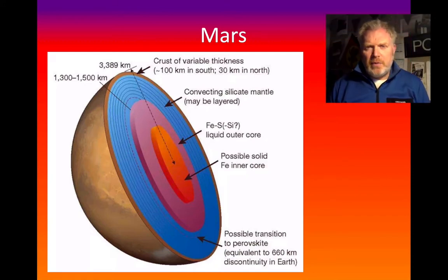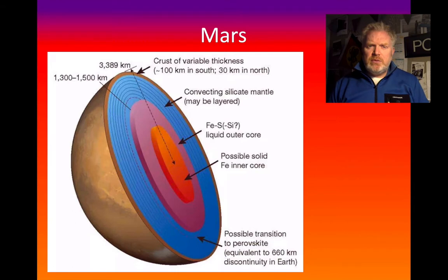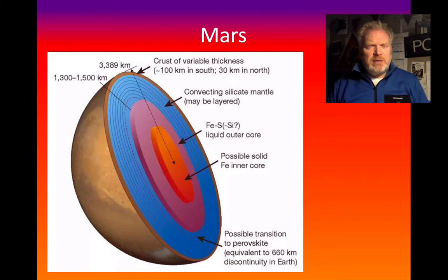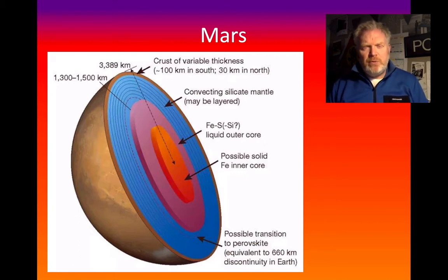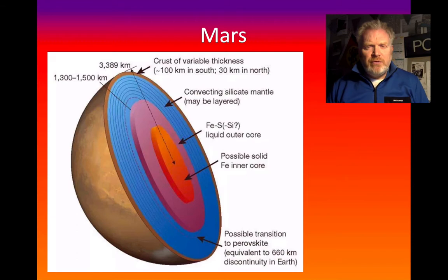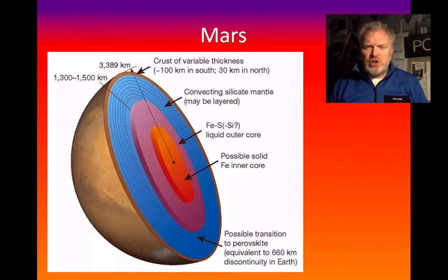Earth is often connected to Mars. We think there are some real similarities between what's happened on the surface of Mars and Earth, which we're going to investigate a bit later in this theme. But what are the similarities and differences between the insides of these planets? This is something we're speculating on a little — notice the word 'possible' appears here quite a lot. It's only fairly recently that a rover has landed on Mars to try and measure some of the Mars quakes that occur, to try and work out what's actually happening below the surface.